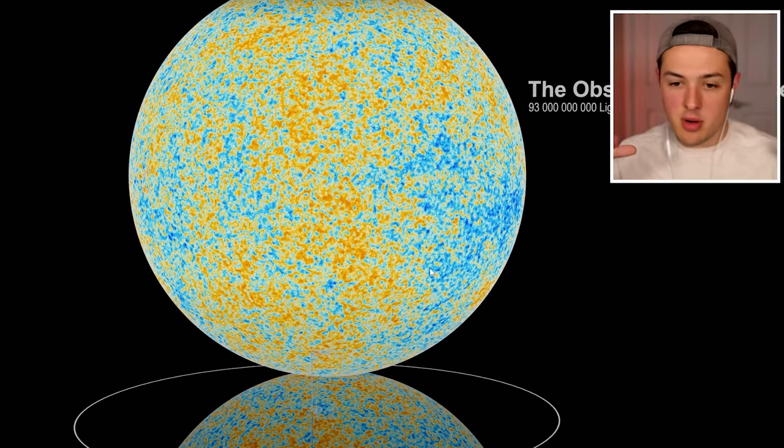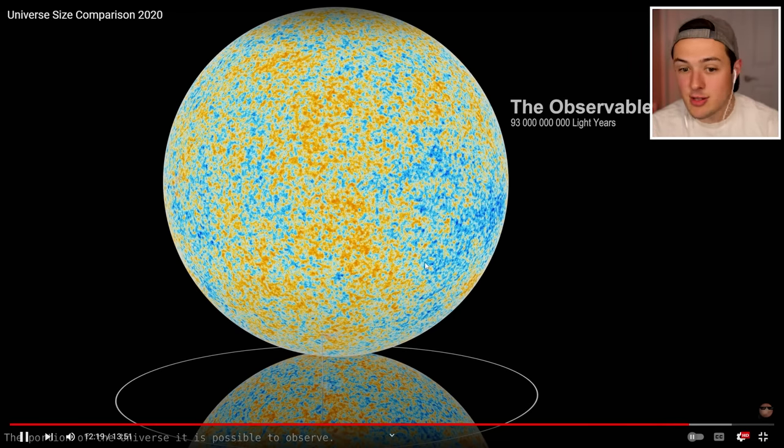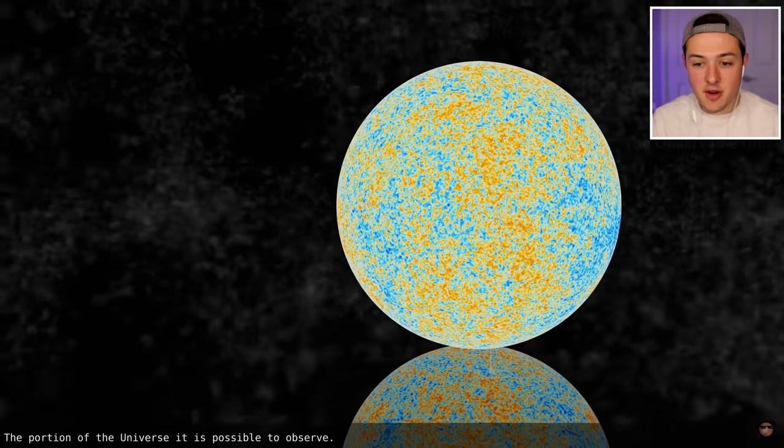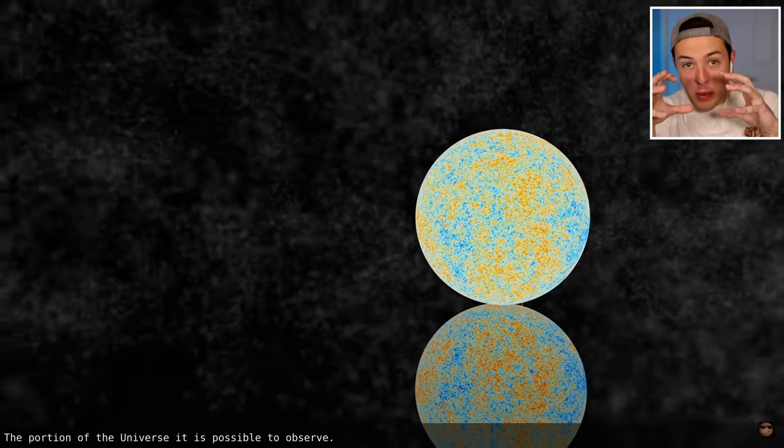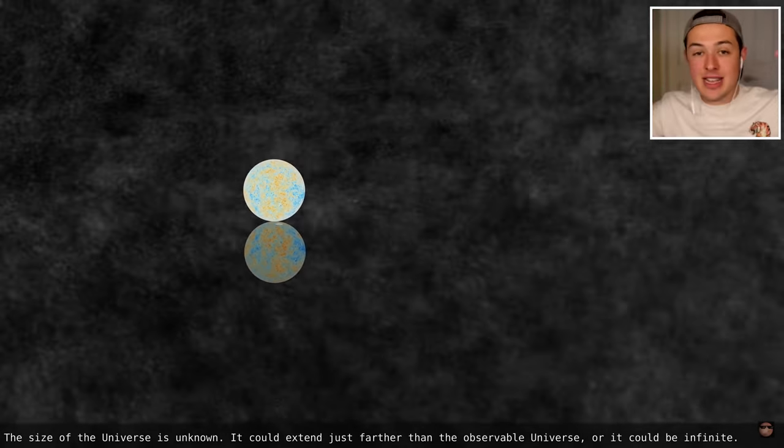And then this is it. Our observable universe. That's it. That's as far as we can look. That's actually crazy to think that we're able to look. What is that? 93 billion light years. Into space. Just using telescopes. Using stuff that we made on Earth. We're able to know all of this information. Just from our little planet. That is smaller than the tip of a pin comparatively to everything in the universe.